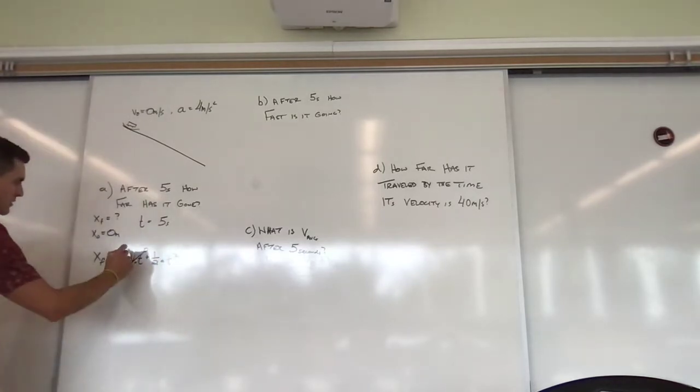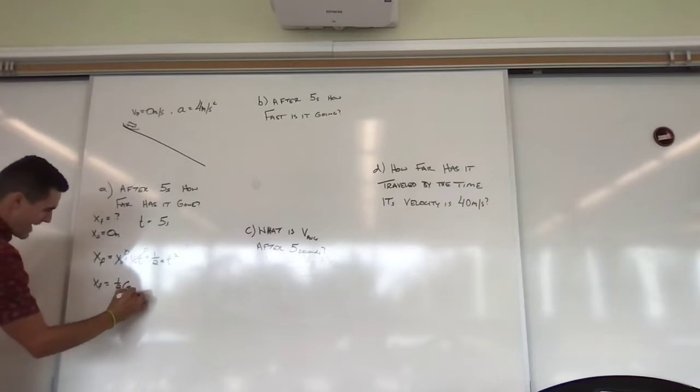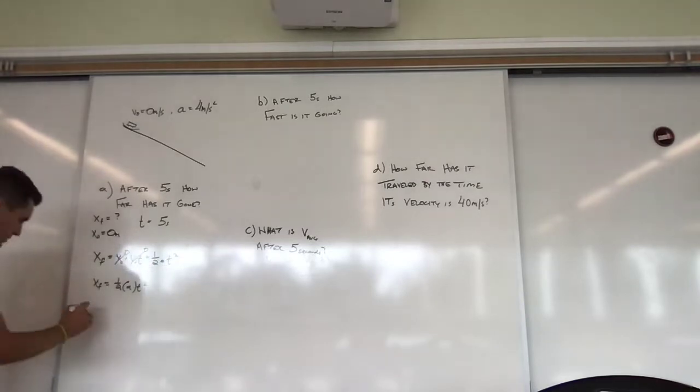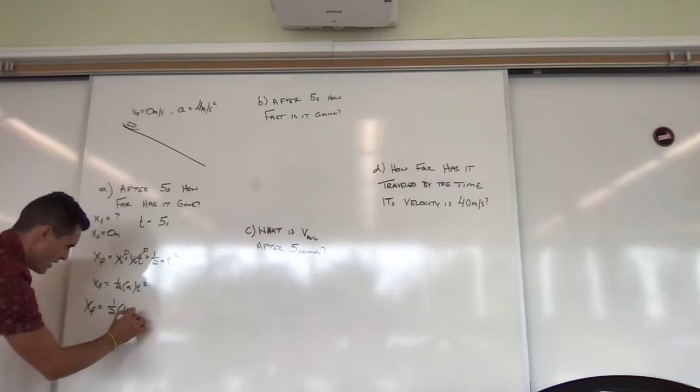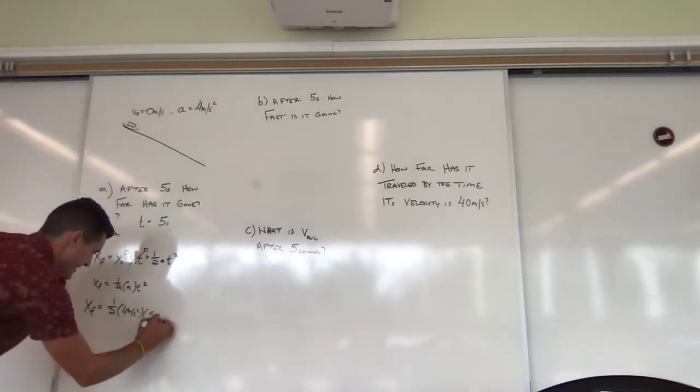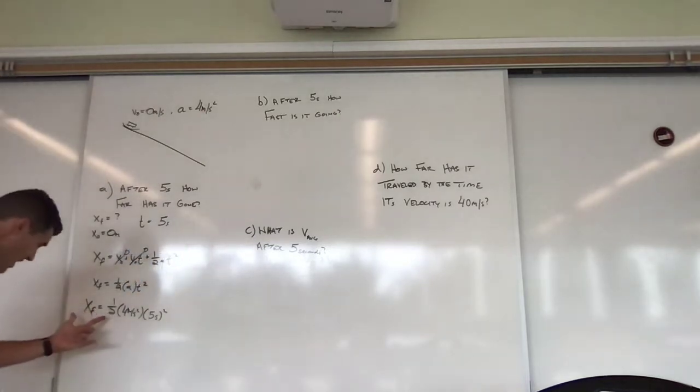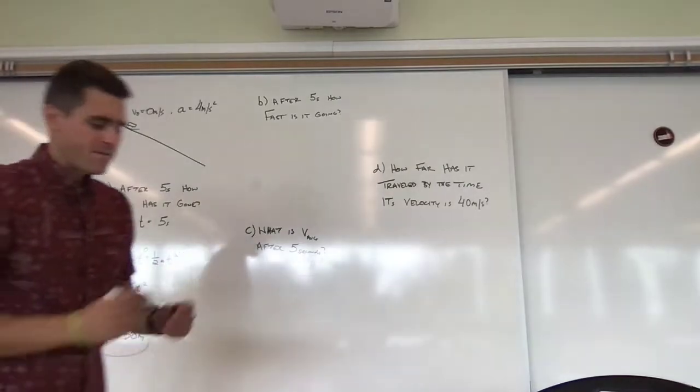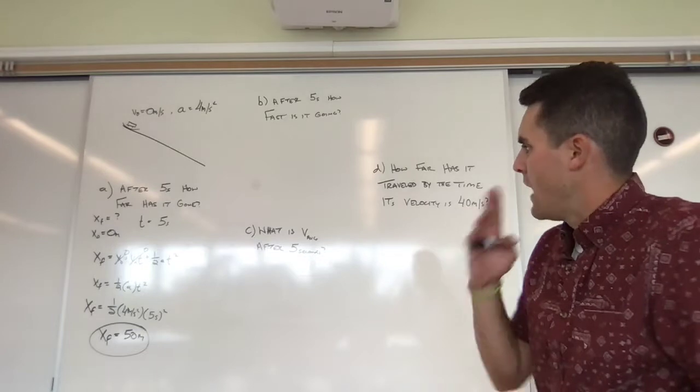I start plugging some things in. Initial velocity is zero. Initial position is zero. x final is equal to one half a t squared. This is my final equation. I can start plugging some numbers into. Final position is equal to one half times that acceleration, which is four meters per second squared times five seconds squared. I get my calculator out and I'm looking at 50. x final is 50 meters. There's my first answer. 50 meters. I can use my calculator or do it in my head. Either one. Check your math. There it is.